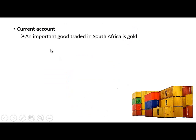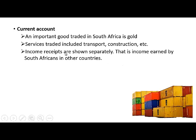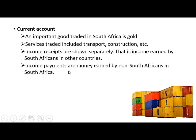Regarding the current account: an important good that is included and traded in South Africa is gold. Services included in the current account refer to services such as transport and construction. Income receipts are shown separately — that refers to income earned by South Africans in other countries — while income payments are money earned by non-South Africans in South Africa.